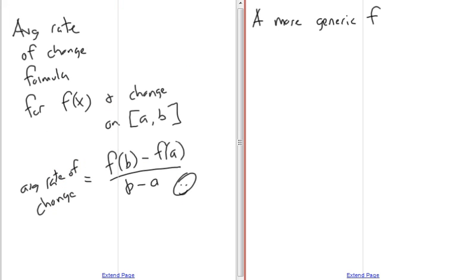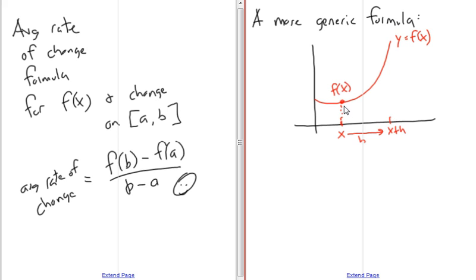What's interesting is that we can actually have a more generic formula for this average rate of change. Rather than saying, what about from a to b? Well, let's just say you have some generic function, y equals f of x. And, we pick an x, any x. And, we kick over here to the right, h. So, that would give us this point here, x plus h. So, that means the y value here on the function would be just f of x. And, then plug in x plus h into the formula, and you get f of x plus h.